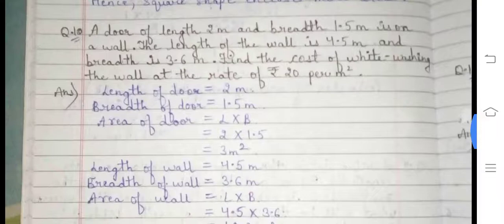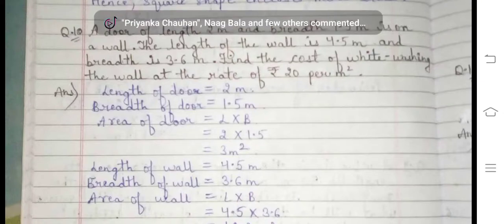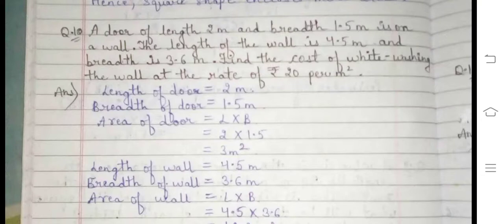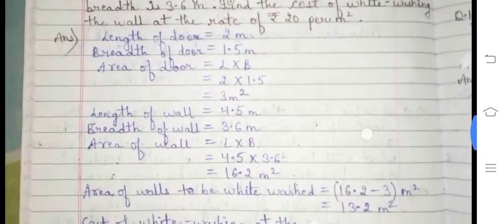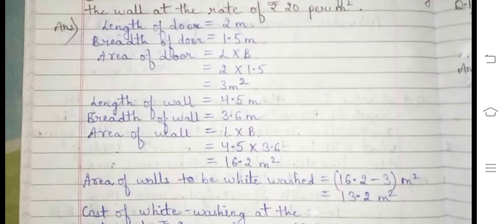Question number 10: A door of length 2 meters and breadth 1.5 meters is on a wall. The length of the wall is 4.5 meters and breadth is 3.6 meters. Find the cost of whitewashing the wall at the rate of rupees 20. Area of door = 2 × 1.5 = 3 meter square. Area of wall = 4.5 × 3.6 = 16.2 meter square.